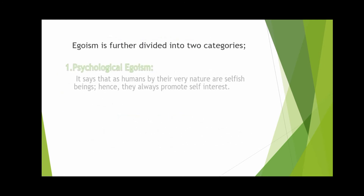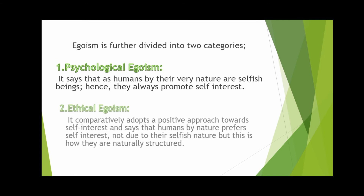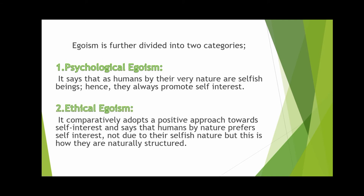Egoism is further divided into two categories: psychological egoism and ethical egoism. Psychological egoism says that as humans by their very nature are selfish beings, they always promote self-interest. Ethical egoism comparatively adopts a positive approach towards self-interest and says that humans by nature prefer self-interest not due to their selfish nature, but this is how they are naturally structured.